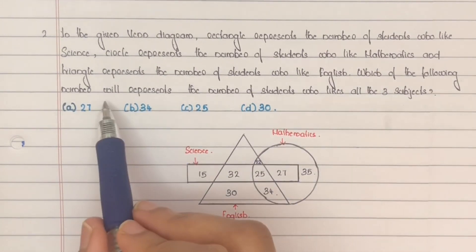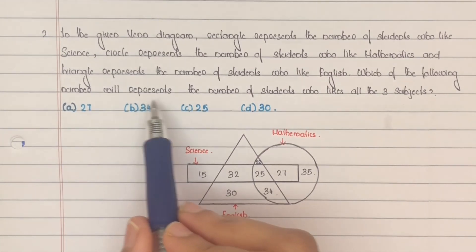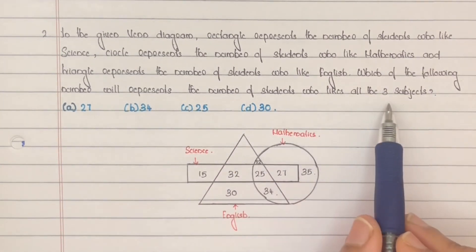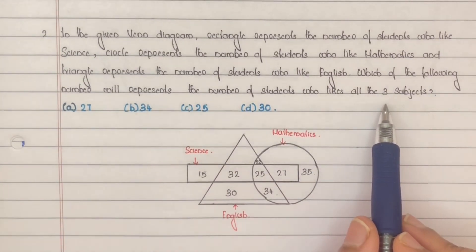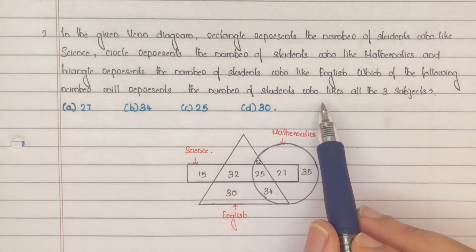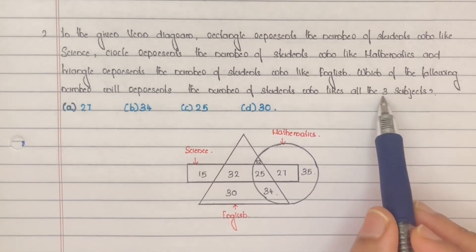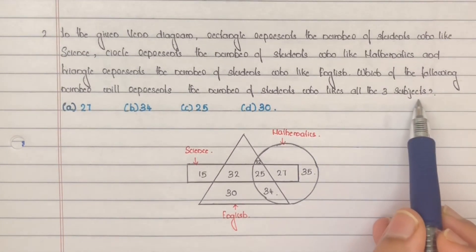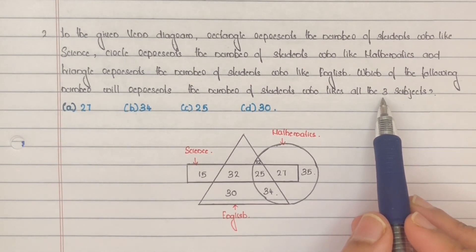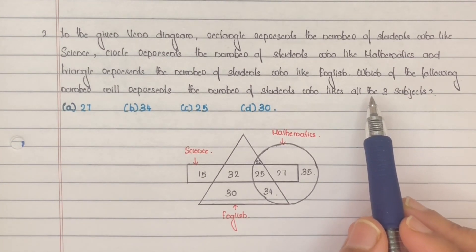Which of the following numbers will represent the number of students who like all three subjects? The question is to find the number of students included in all three figures — that is, the number of students common to the rectangle, triangle, and circular portion.